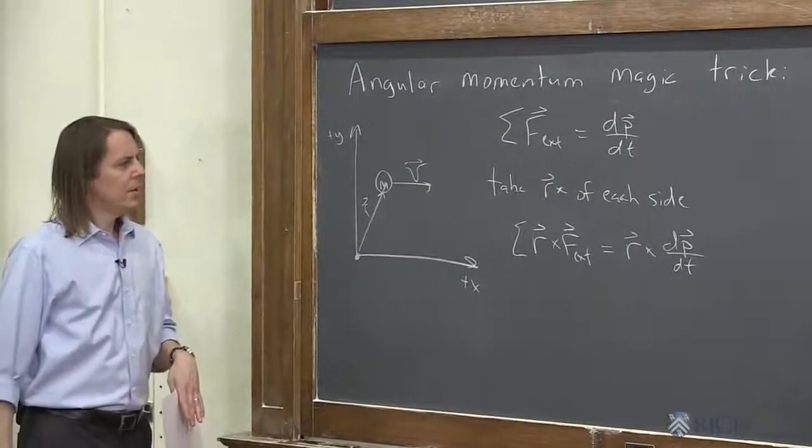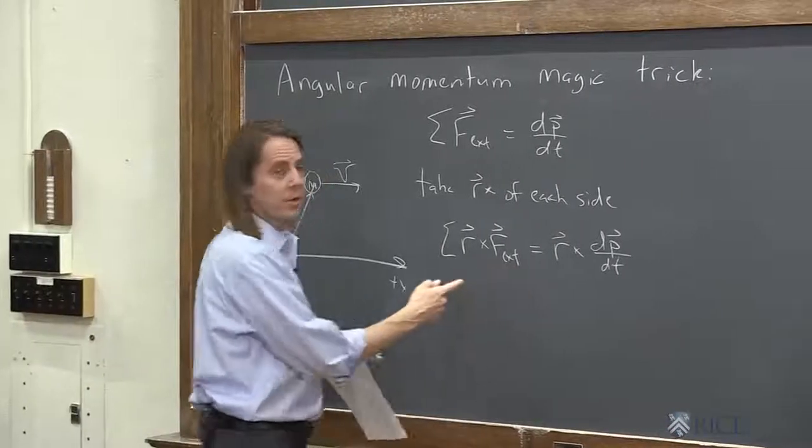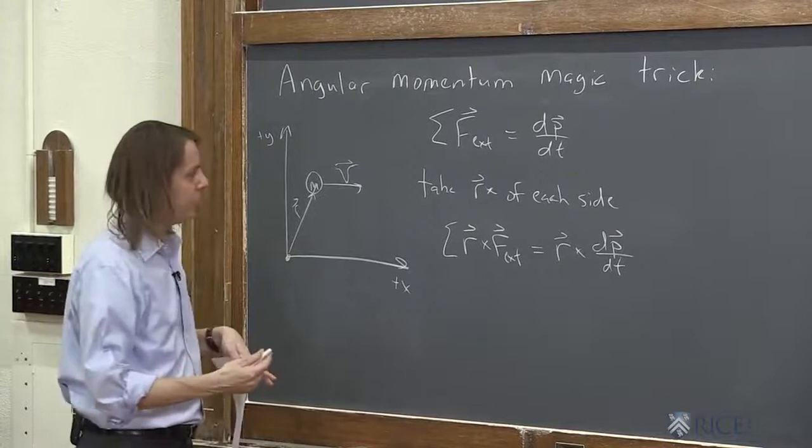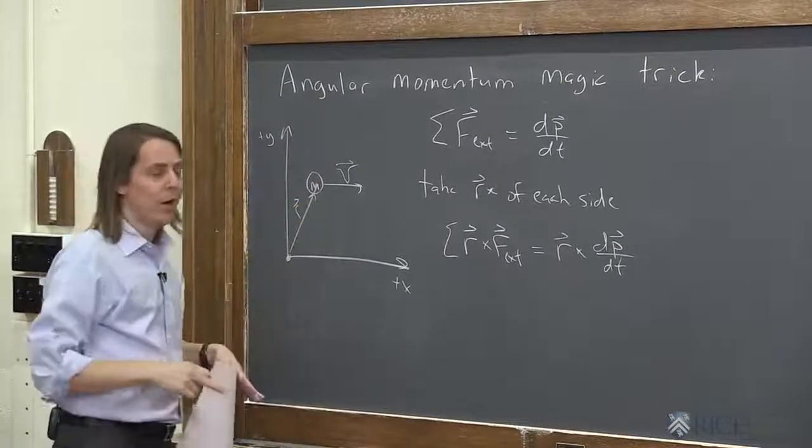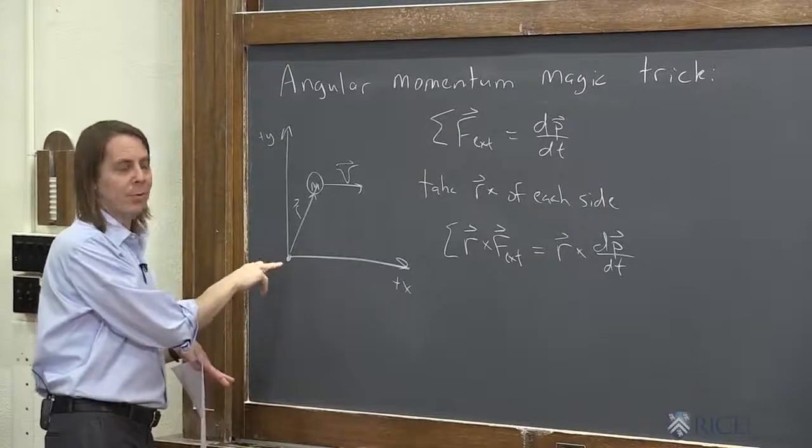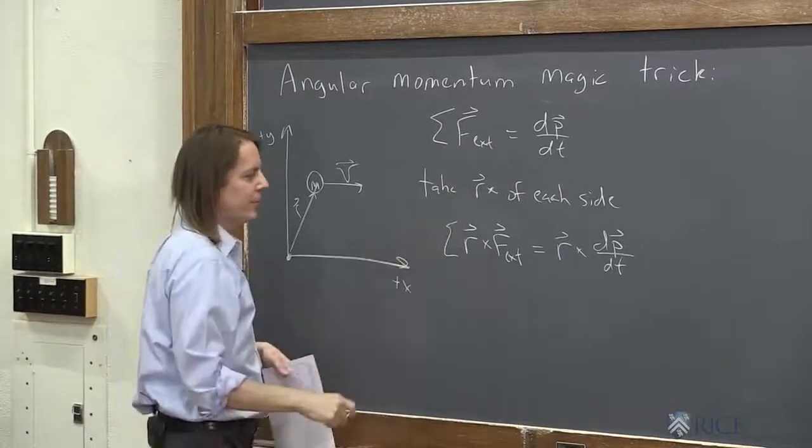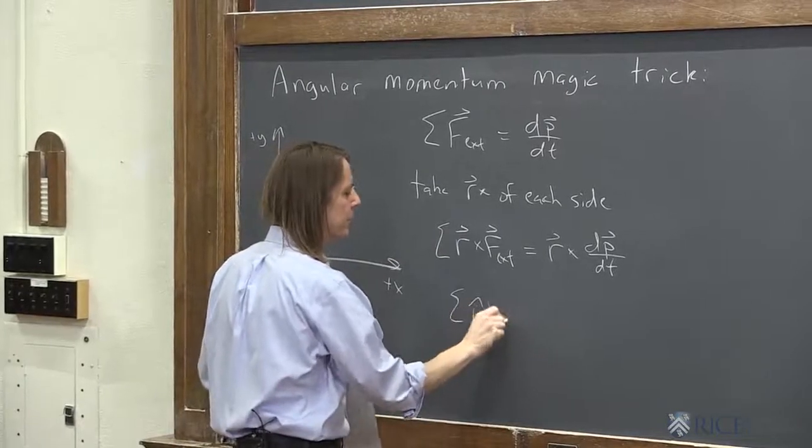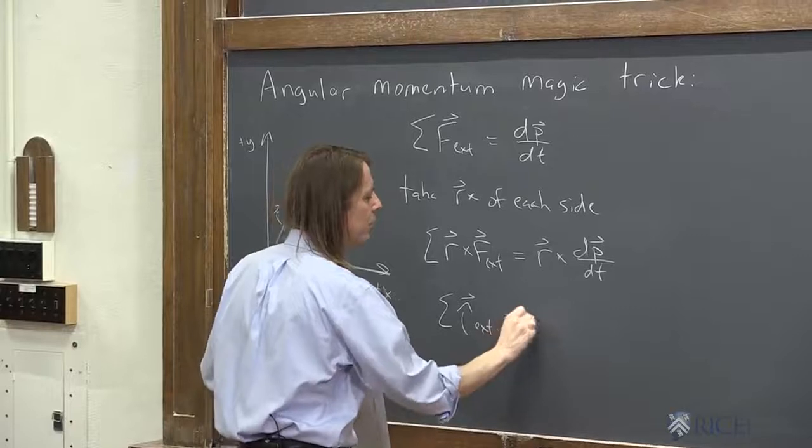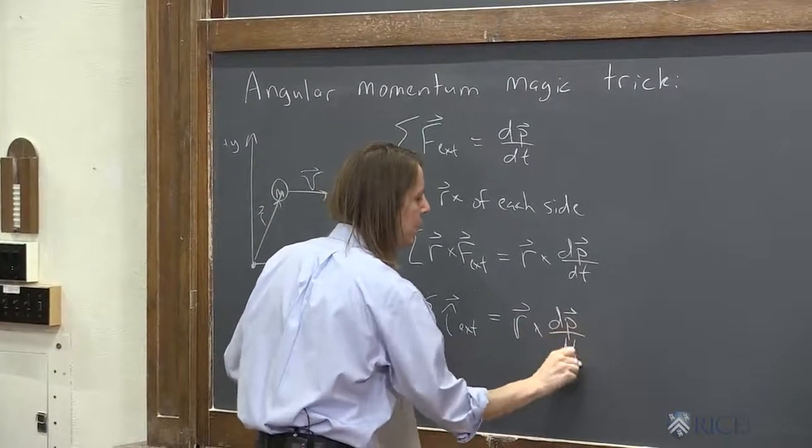So when we look at this, one thing jumps out at us. This thing, this is a torque. That's the sum of the external torques, if this happened to have some torque being applied to it around the origin. Remember, a torque always requires a point of reference. Well, it's defined by this vector r. So from here we can say, in our magic trick, the sum of the external torques equals r cross dp dt.